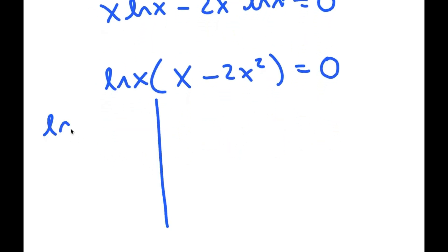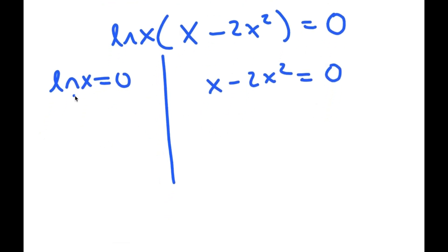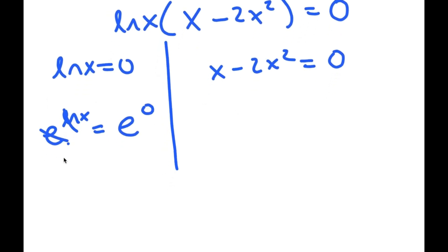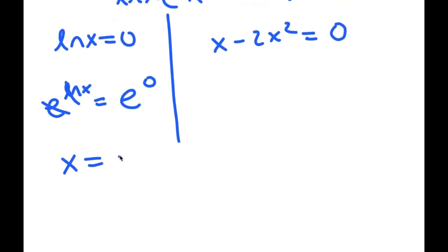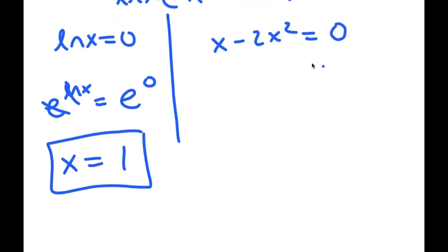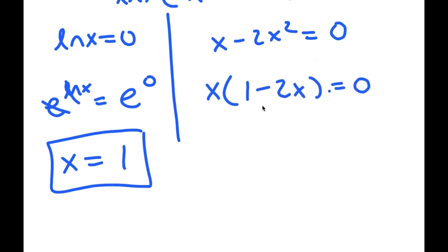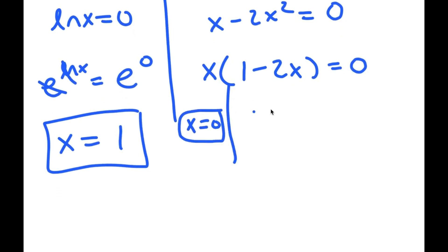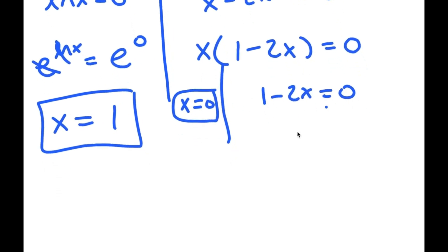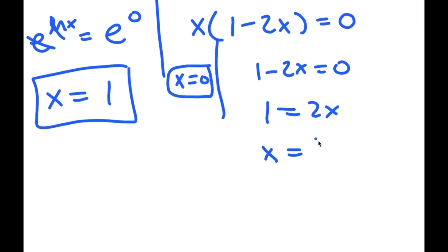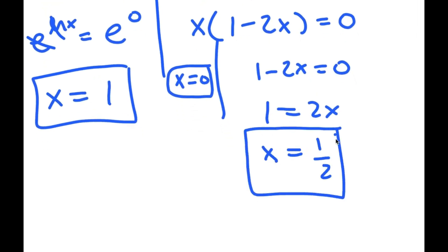This gives two equations: ln x equals 0, and x minus 2x squared equals 0. For ln x equals 0, taking e to the power of both sides gives x equals e to the power of 0, which is 1. For x minus 2x squared equals 0, factoring out x gives x times 1 minus 2x equals 0, meaning x equals 0 or 1 minus 2x equals 0, so x equals one half. These are my three solutions to this equation.